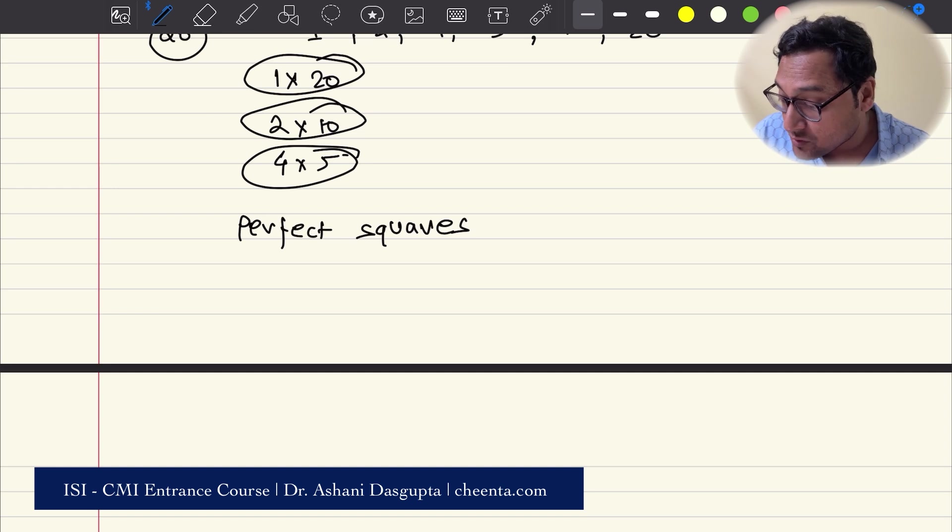For example, if I look at 36, the divisors are 1, 2, 3, 4, and then 6, 9, 12, 18 and 36. Right? So you can pair up 1 with 36, 2 with 18, 3 with 12, 4 with 9.